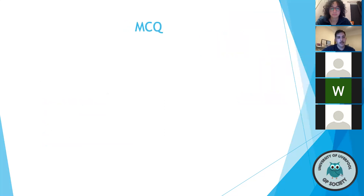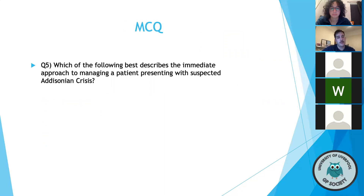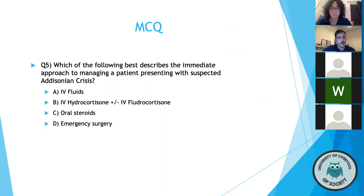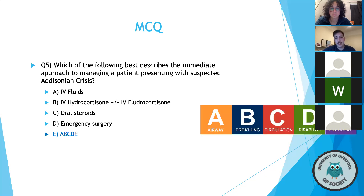The final question asked about immediate management of a patient with Addisonian crisis. The correct answer is A-to-E assessment. Any time you're worried about a patient's health, you start at the airway, then move to breathing, then circulation, then disability, then exposure. Correcting life-threatening problems first keeps the patient stable in the acute phase. While IV hydrocortisone and other options are relevant, an A-to-E assessment is always the most appropriate immediate first step.